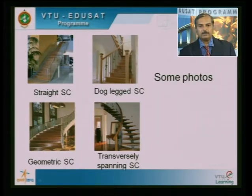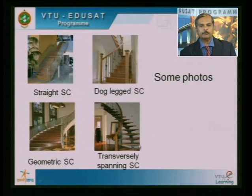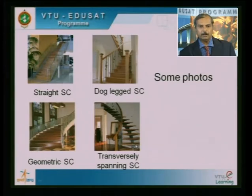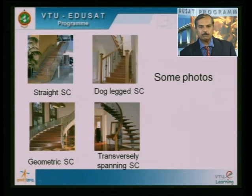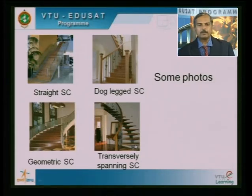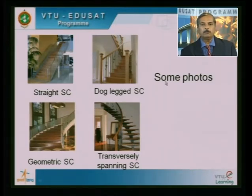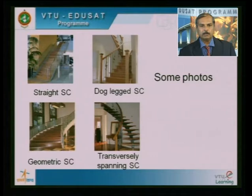Here it is a transversely spanning staircase. There is no waist slab as such — only the central spiral beam visible, called the spandrel beam, on which the steps are mounted. The step is spanning in the transverse direction. In RCC this is what is referred to as a transversely spanning staircase — where we have a spandrel beam in RCC and over that, steps are cast monolithically. Depending on the situation, we need to identify whether it is a longitudinally or transversely spanning staircase.